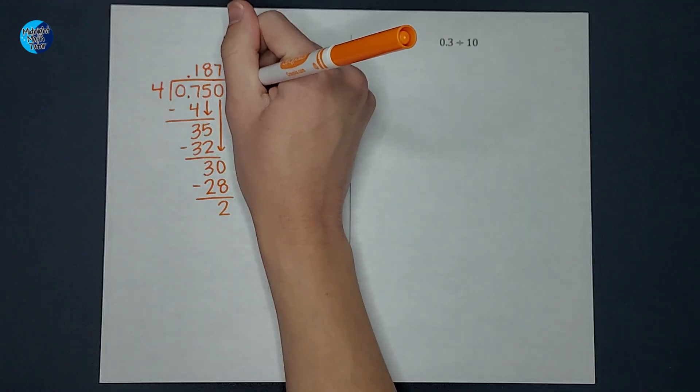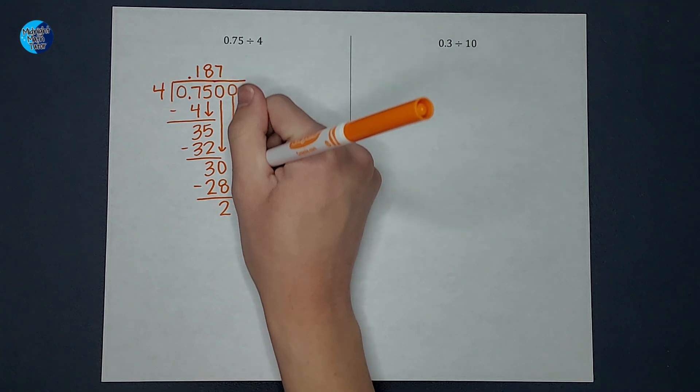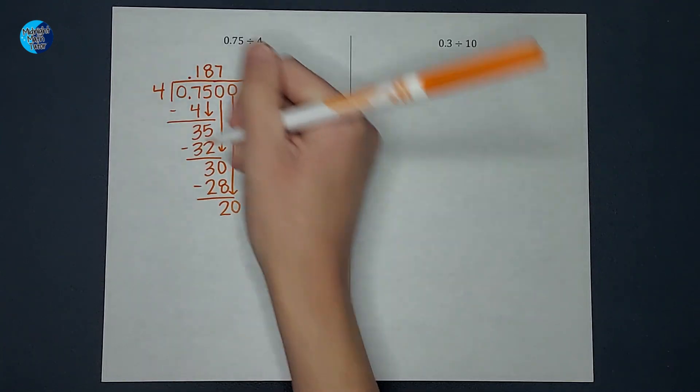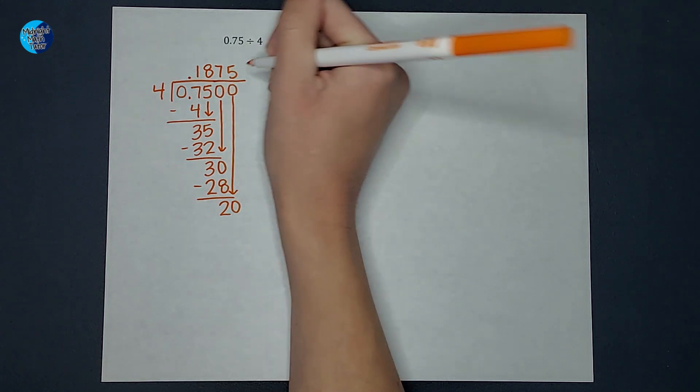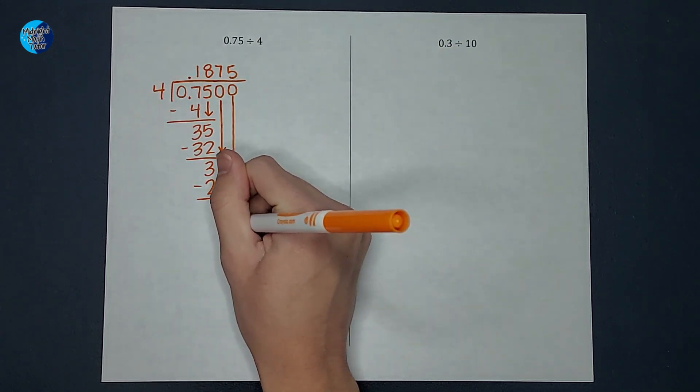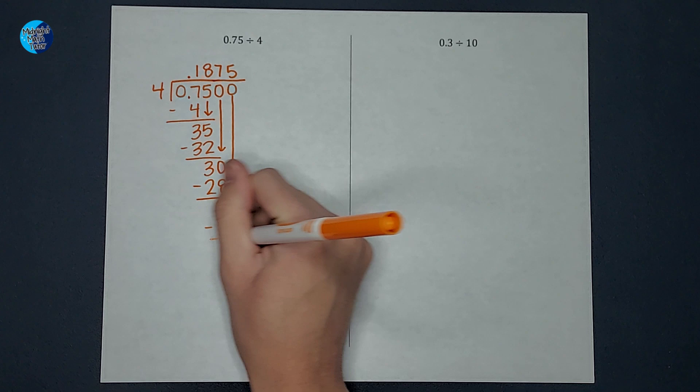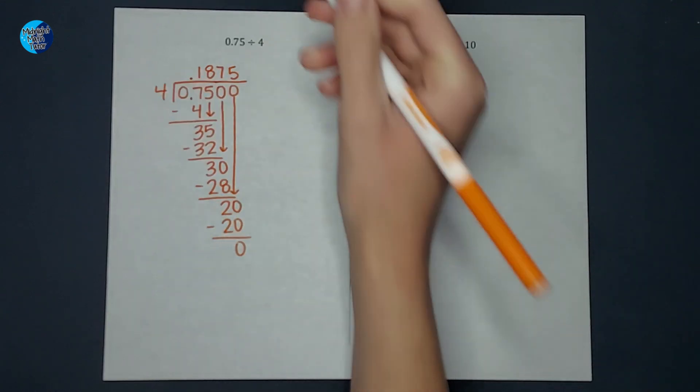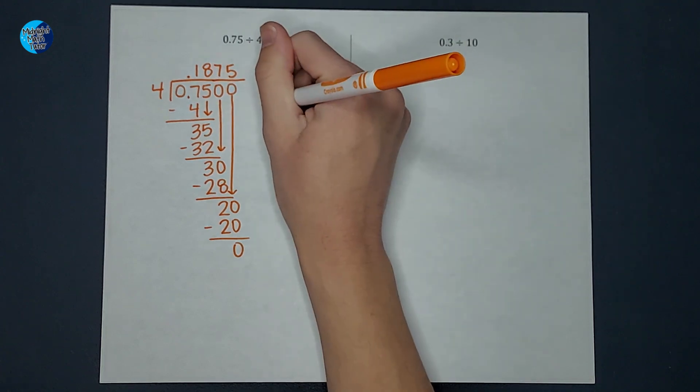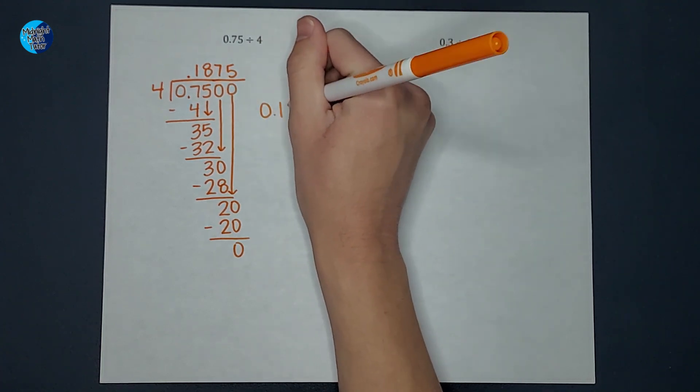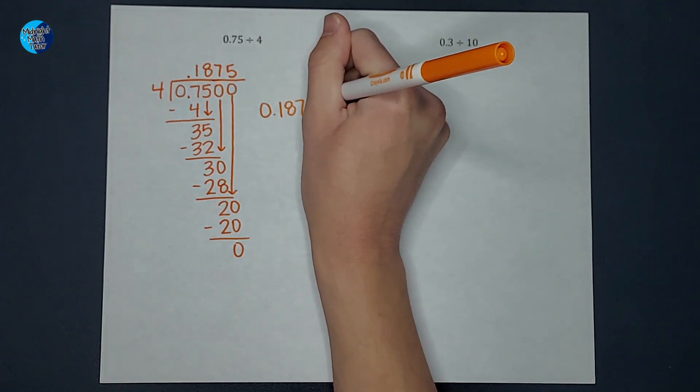Well I still have a remainder so I'm going to add another 0. Bring it down. How many times does 4 go into 20? It goes 5 times. 5 times 4 is 20. When I subtract that I get 0. So 0.75 divided by 4 is 0.1875.